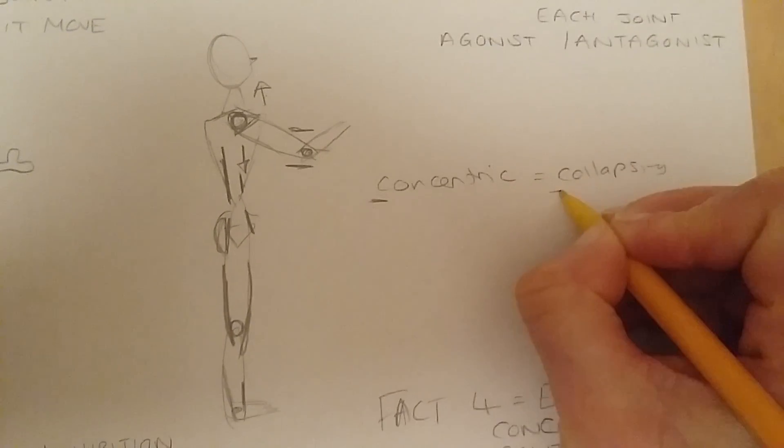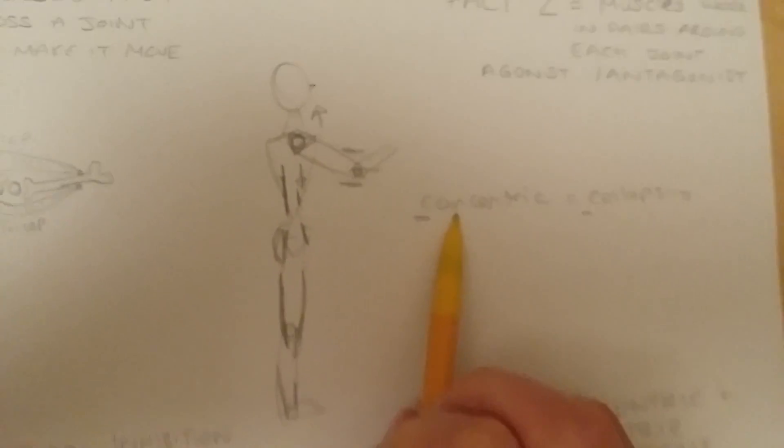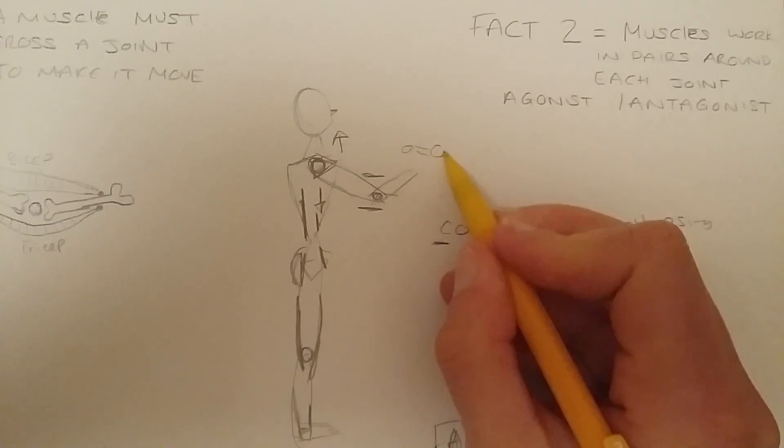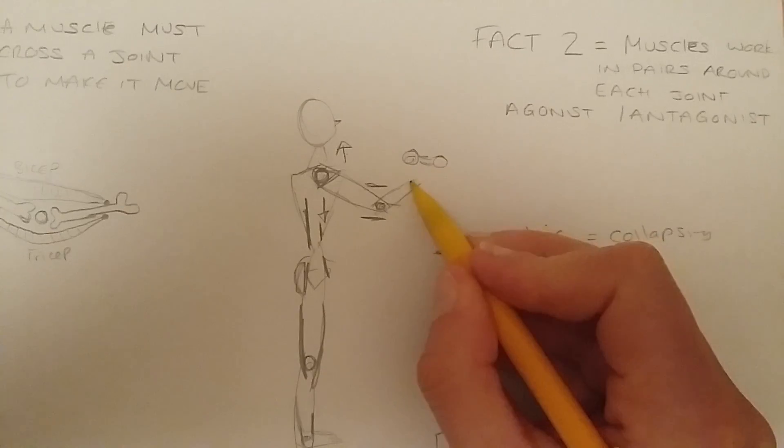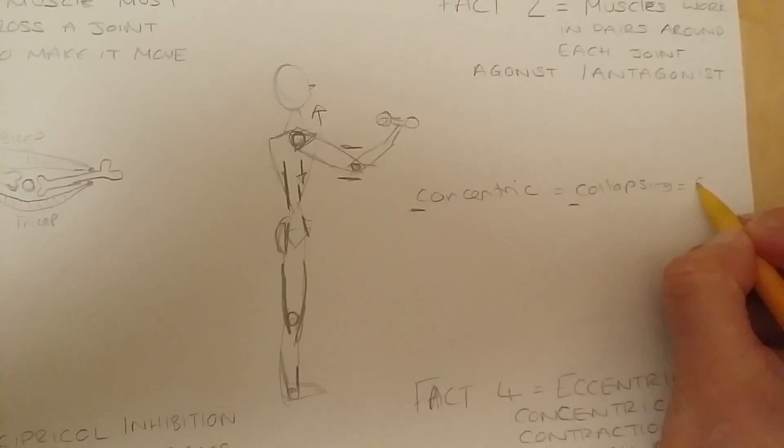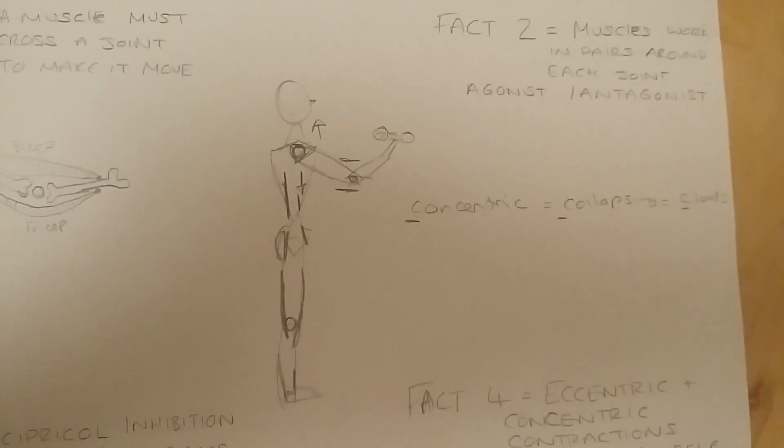Now that's a really good way of remembering it, but also you'll notice that if it's a concentric contraction, then the weight that you're holding when you do that bicep curl, that's a dumbbell in case you're wondering, the weight you're holding will actually be going up towards the clouds. So you know that the weight is going up to the clouds.